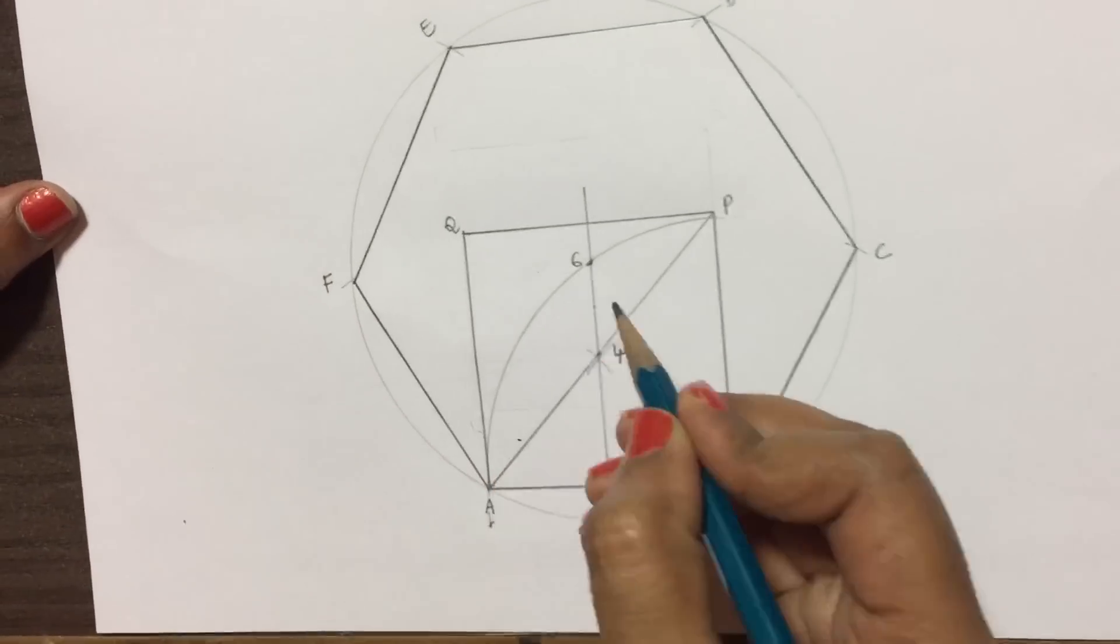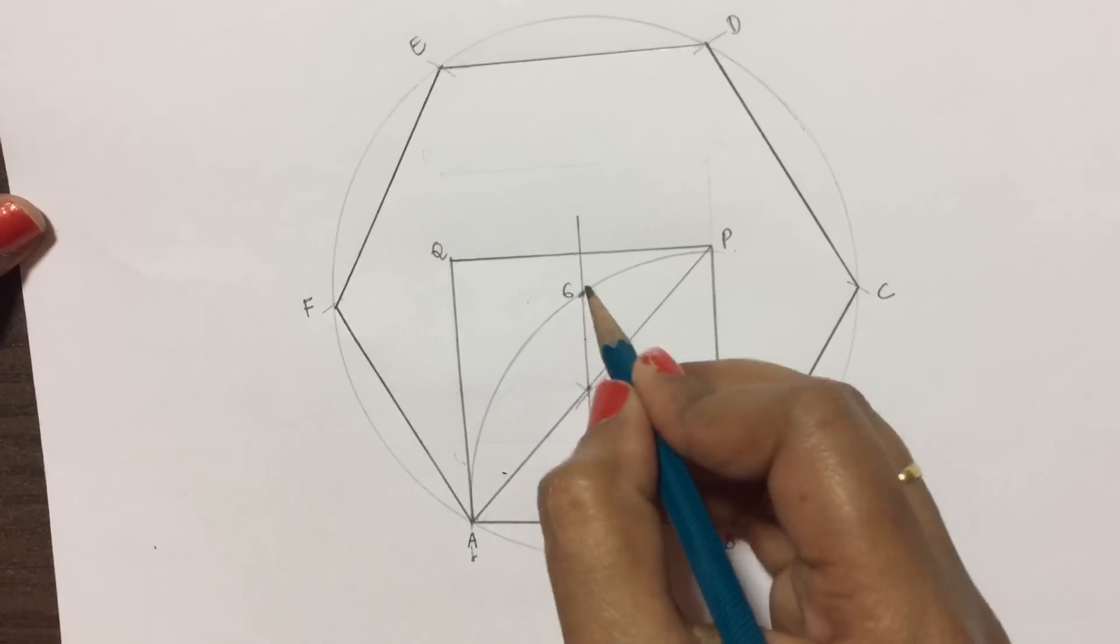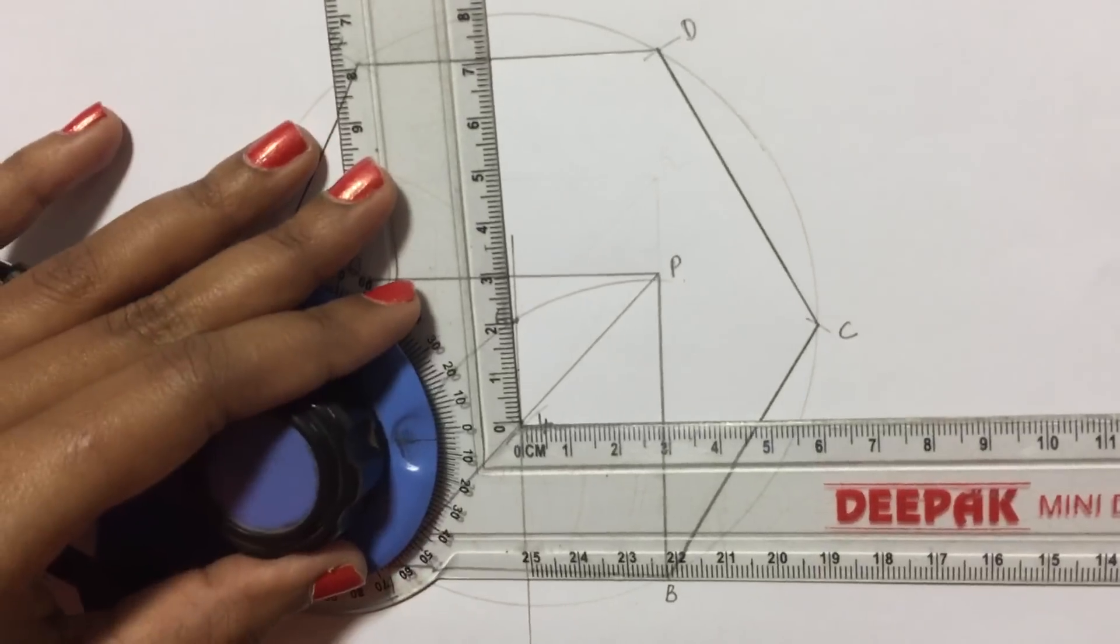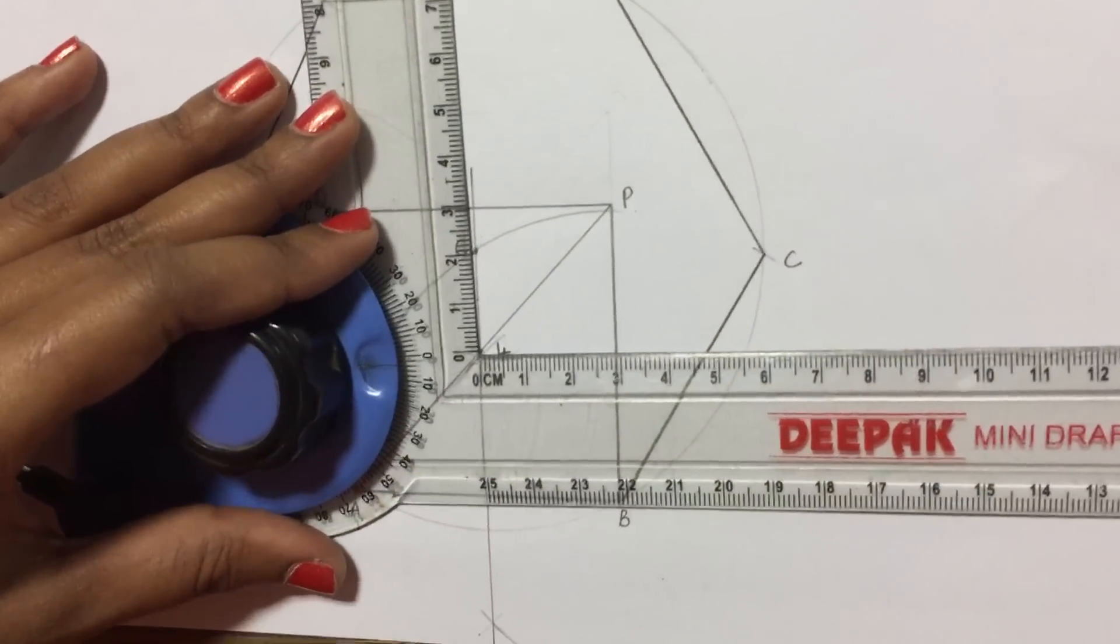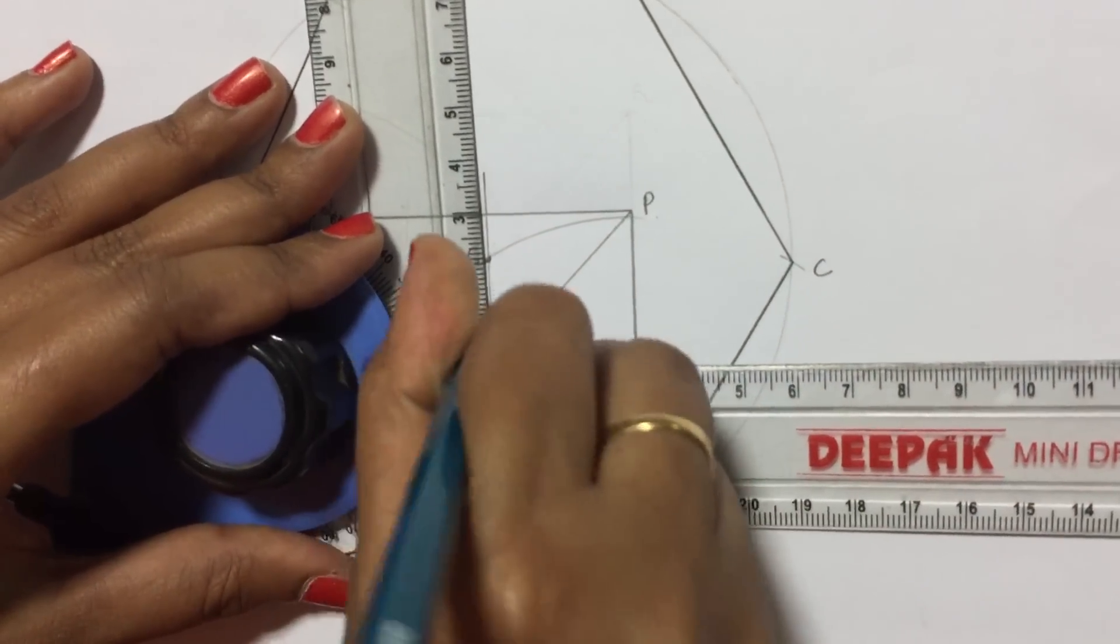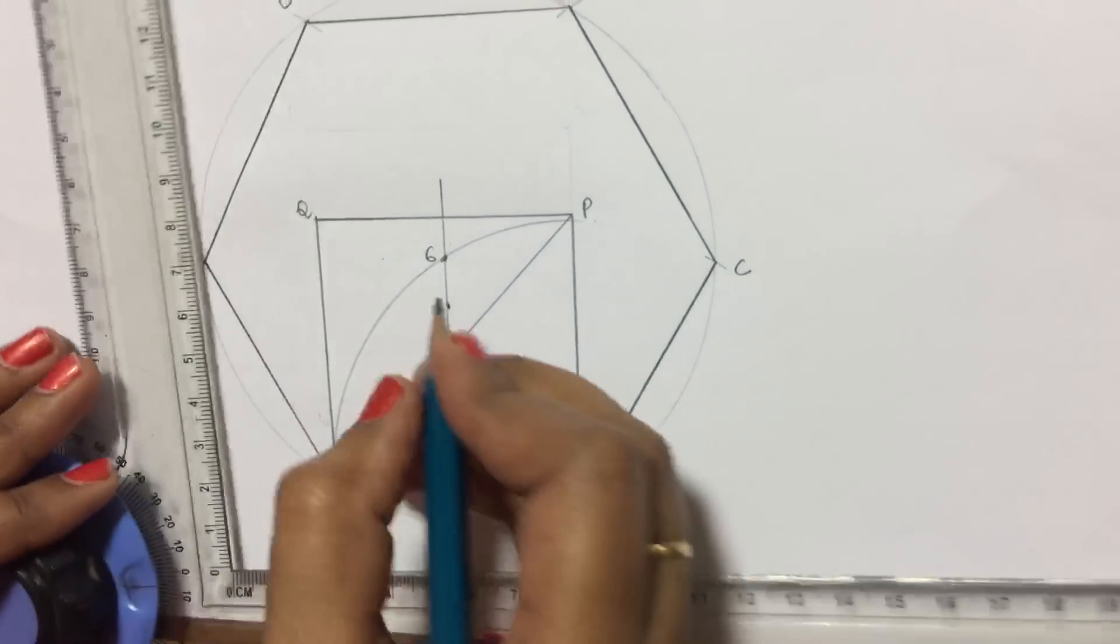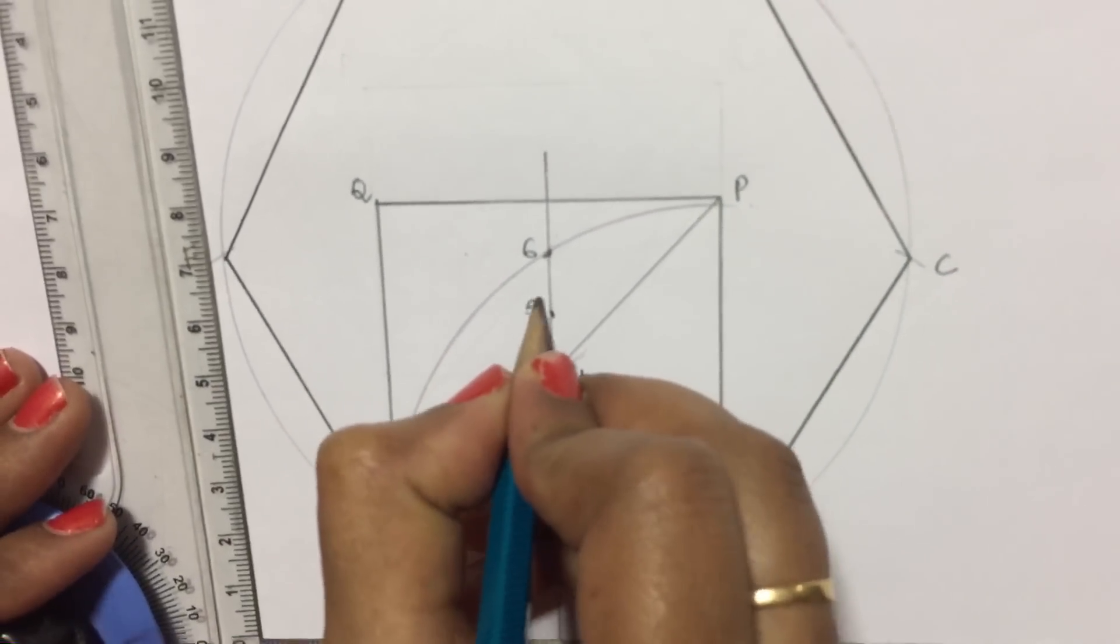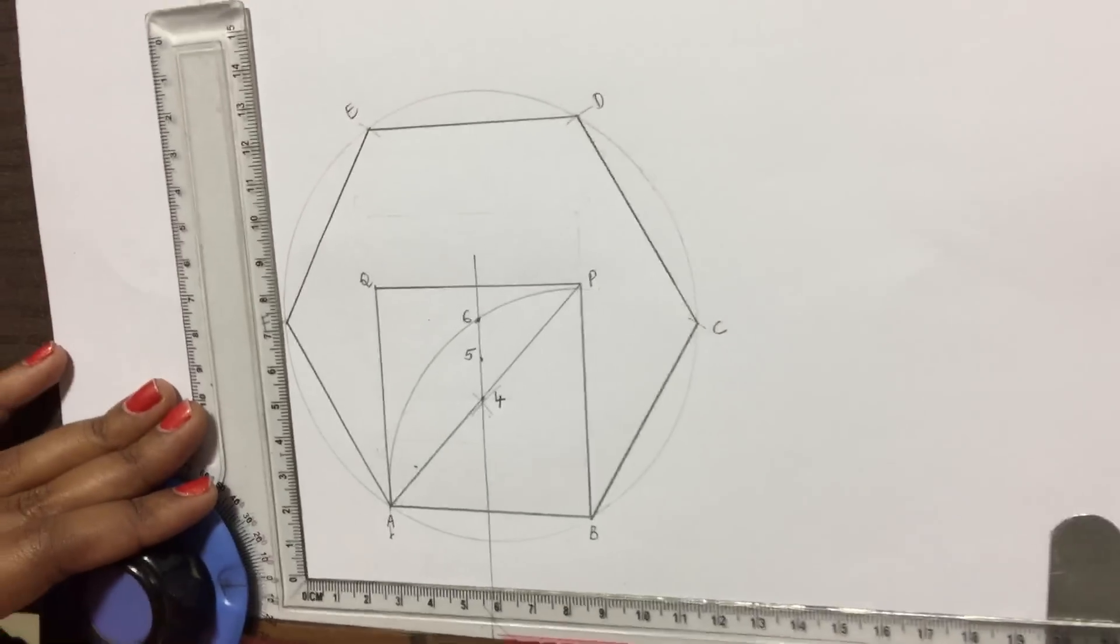For that I'll measure the distance between four and six. It is around some twenty, so I can take ten. This point which is in between six and four is point five with point